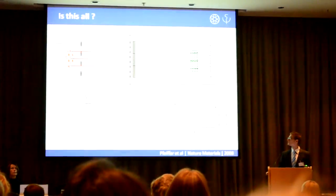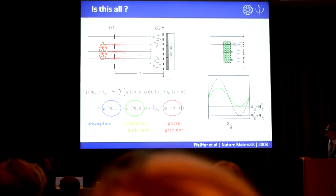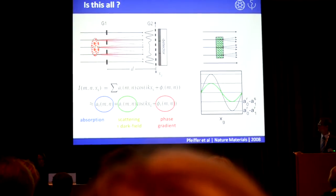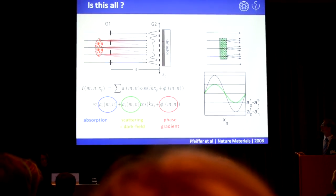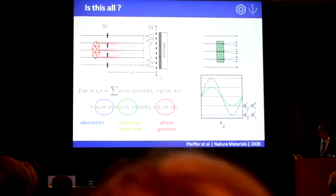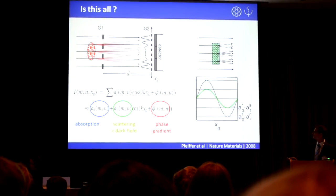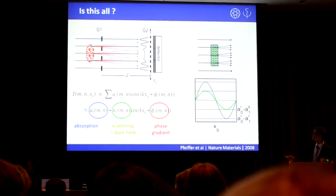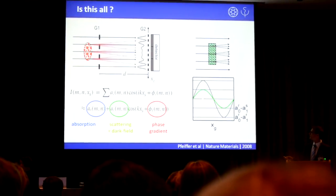Let's have a closer look at this amplitude value A1. Imagine a sample that actually scatters a lot — that just diffuses the beam like a milk glass diffuses visible light. The same can actually happen for X-rays. If you have a sample composed of microstructure and density changes, it diffuses the X-ray beam only a tiny amount. But this is enough to destroy our visibility fringes and essentially reduces this oscillation amplitude to a very low value. So if you have a diffusing sample, this beam oscillation height — this intensity curve height — is actually reduced.